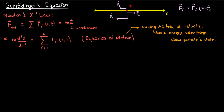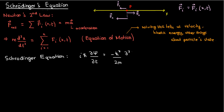In fact, the goal of quantum mechanics is to solve something called the Schrödinger equation, which is i times h-bar times the partial of psi with respect to t, equals negative h-bar squared over 2m times the second partial of psi with respect to x, plus V times psi. But now, instead of solving for the particle's position, we're solving for something much more special — a quantity called the wave function, written as psi.